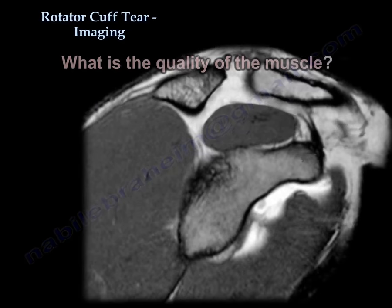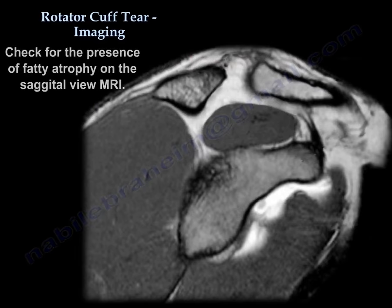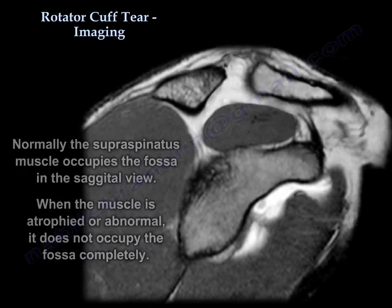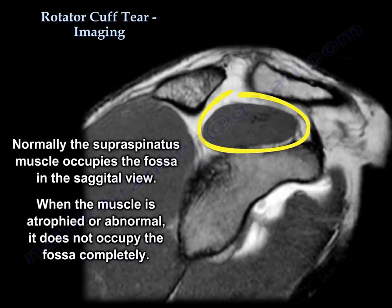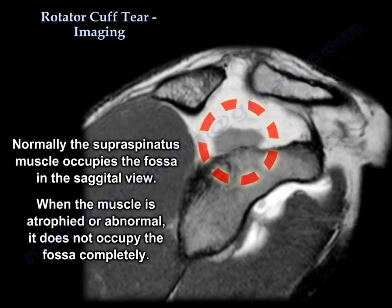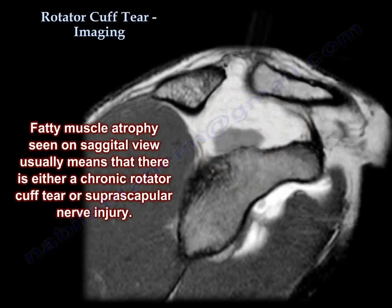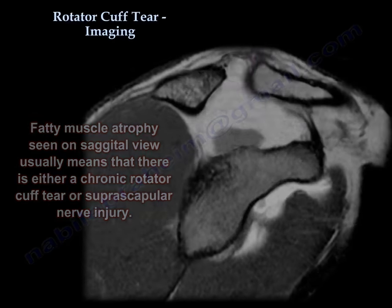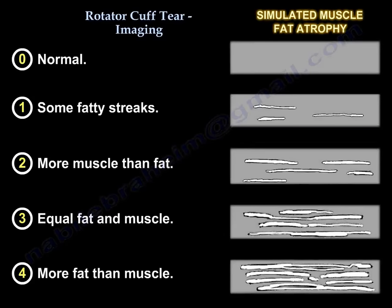You want to know the quality of the muscle by assessing fatty atrophy on the sagittal view, which is the best view to show fatty atrophy. Normally, the supraspinatus muscle occupies its fossa on the sagittal view. When the muscle is atrophied, it doesn't fill the fossa completely. Fatty muscle atrophy on the sagittal view indicates either a chronic rotator cuff tear or suprascapular nerve injury. The staging is: stage 0 normal, stage 1 some fatty streaks, stage 2 more muscle than fat, stage 3 equal fat and muscle, stage 4 more fat than muscle.